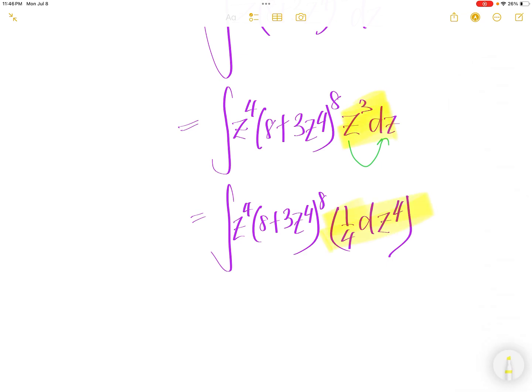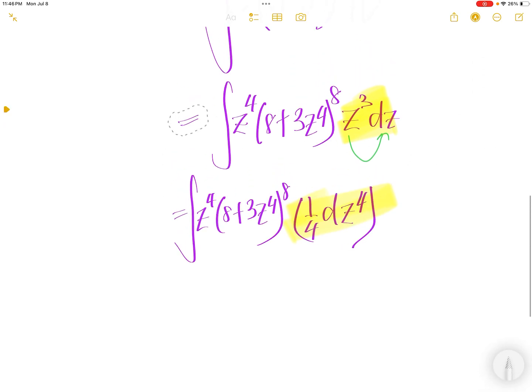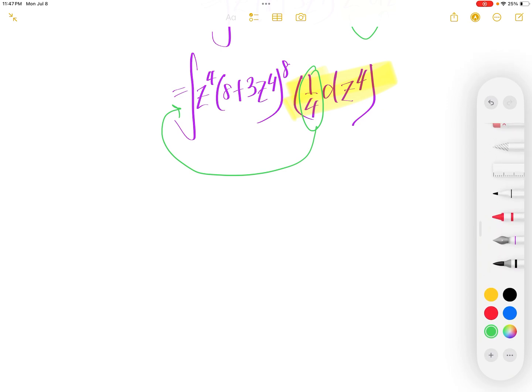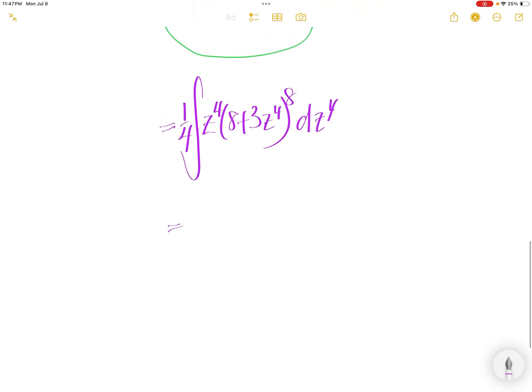That is, this piece is the same thing as that. Now, the constant you see, one quarter, can be brought in front of the integral. Then you have integral z to the power of 4, or here is one quarter, and then 8 plus 3z to the power of 4, to the power of 8, dz to the power of 4.